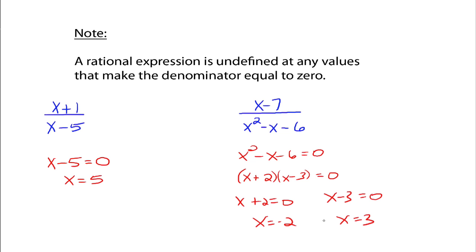If x is either negative 2 or 3, then our rational expression is undefined. All other numbers are fine, but negative 2 and 3 make the denominator equal to 0. So that's the idea on finding what makes a rational expression undefined — you're just figuring out what numbers make the denominator 0.